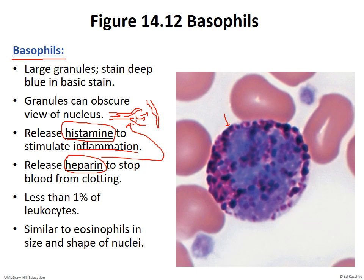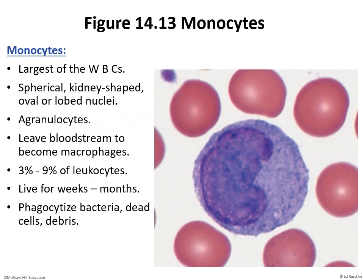So those are the three granulocytes: neutrophil with the weird multi-lobed nucleus, eosinophil with red granules, and basophil with blue-purple granules. Moving on to the agranulocytes — the first is called a monocyte. The monocyte is the largest of the white blood cells, and you can see how big it is compared to a red blood cell. The key to identifying a monocyte is its kidney-bean-shaped nucleus — it is a very large nucleus, more than half the cell.